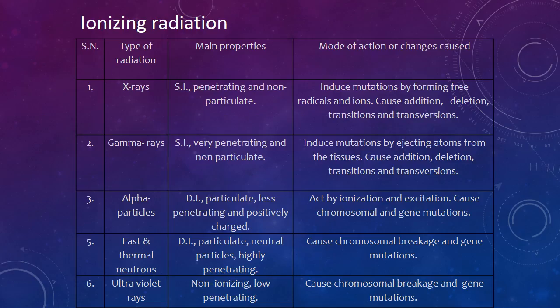Mutations may be induced by two types: ionizing radiation and chemical agents. Among ionizing radiations, X-rays play a dominant role — they induce mutation by forming free radicals and ions, causing addition, deletion, transition, and transversion. Gamma rays have very high penetrating power and are non-particulate, also inducing mutation by ejecting atoms from tissues, causing addition, deletion, transition, and transversion.